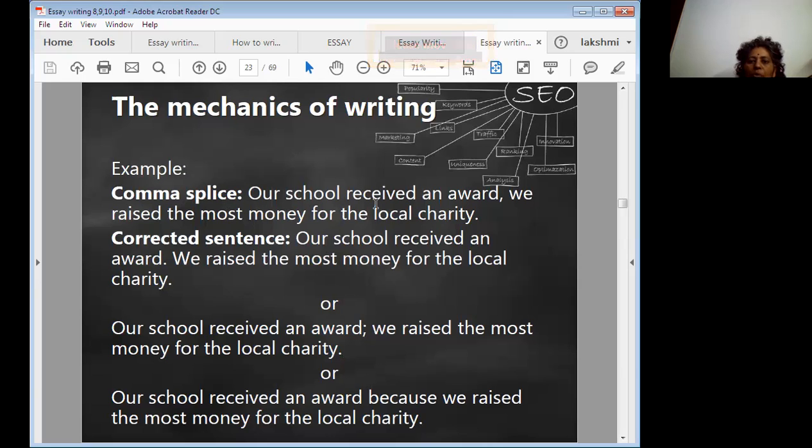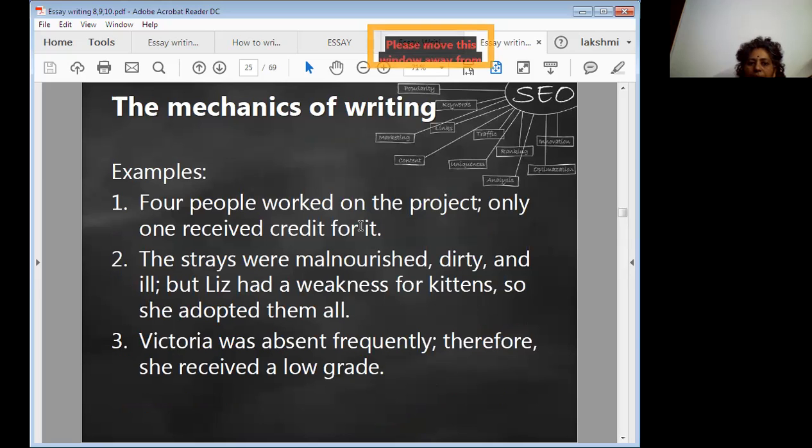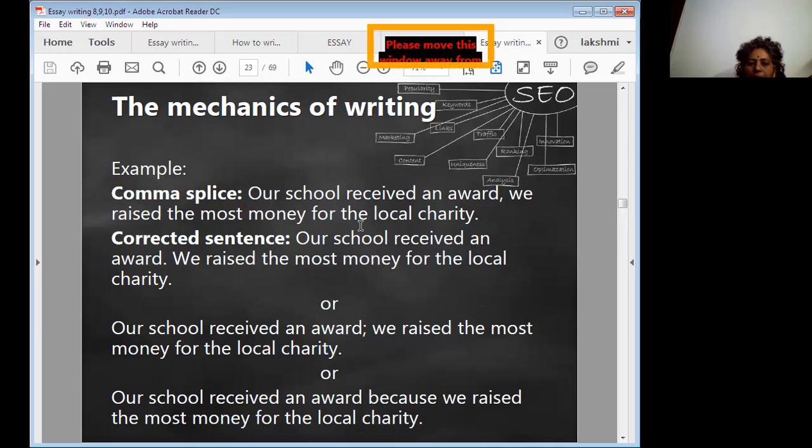So here, continue the same mechanics of writing. What is the comma splice? 'Our school received an award, we raised the most money for the local charity.' Corrected sentence: 'Our school received an award. We raised the most money for the local charity.' Or you can write it another way: 'Our school received an award; we raised the most money for the local charity.' Third model: 'Our school received an award because we raised the most money for the local charity.'